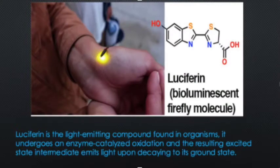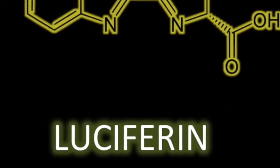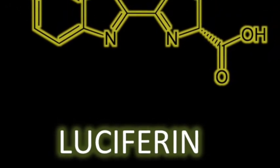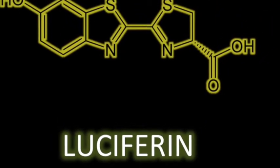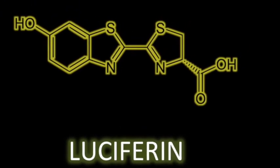Luciferin is the light-emitting compound found in organisms. It undergoes an enzyme-catalyzed oxidation, and the resulting excited state intermediate emits light upon decaying to its ground state. While luciferin is only the generic name, the compound's general chemical structure is (4S)-2-(6-hydroxy-1,3-benzothiazol-2-yl)-4,5-dihydrothiazole-4-carboxylic acid, and contains functional groups benzene, alcohol, carboxylic acid, imine, and sulfide.